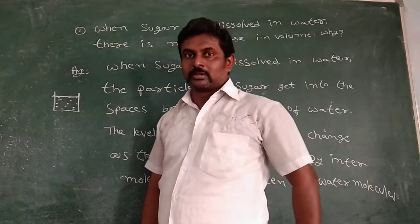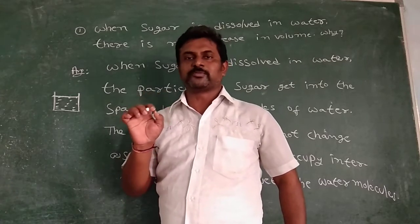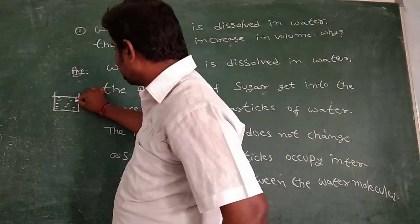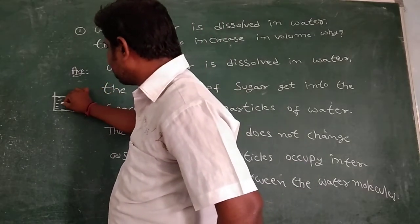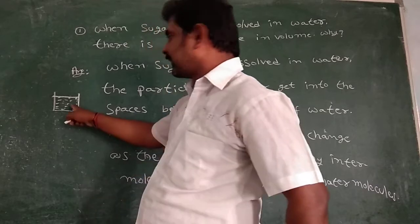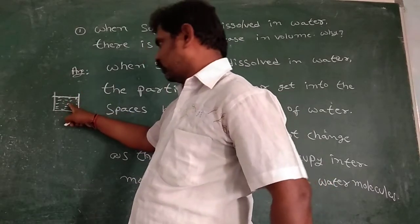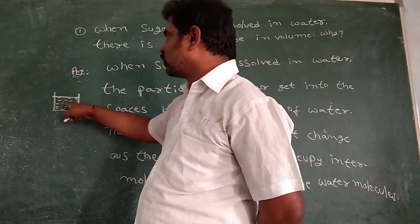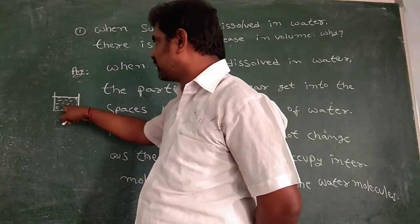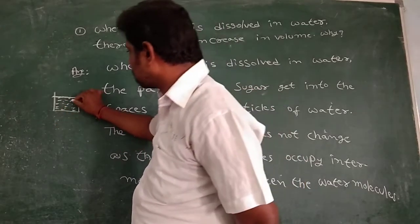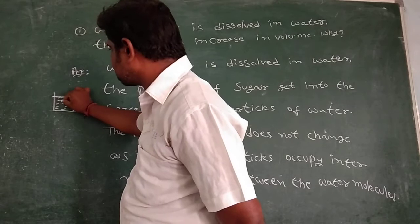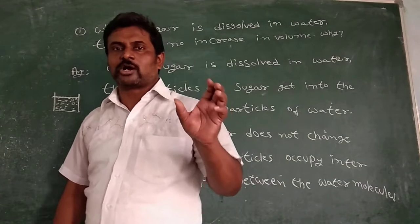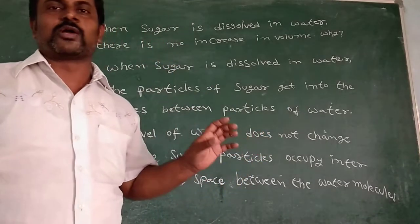As we know, liquids have small gaps between one atom and another atom. The water molecules have small gaps between them. Here, sugar is the solute. The solute particles are completely dissolved in the water, and the sugar particles occupy the spaces between the water molecules.